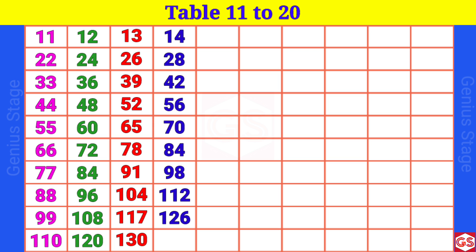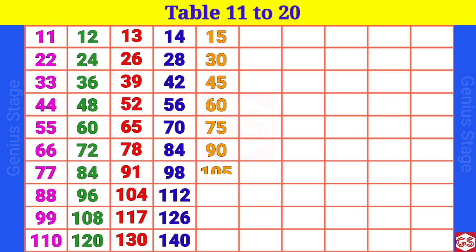14 10s are 140. 15 1s are 15, 15 2s are 30, 15 3s are 45, 15 4s are 60, 15 5s are 75, 15 6s are 90, 15 7s are 105, 15 8s are 120, 15 9s are 135.